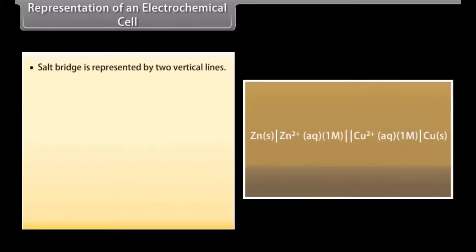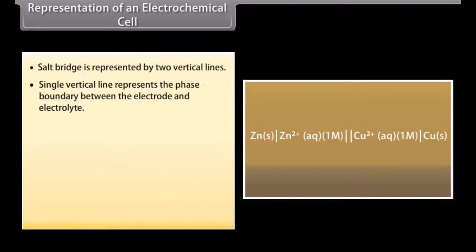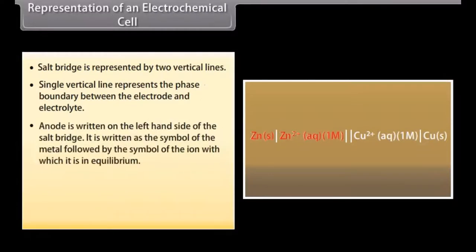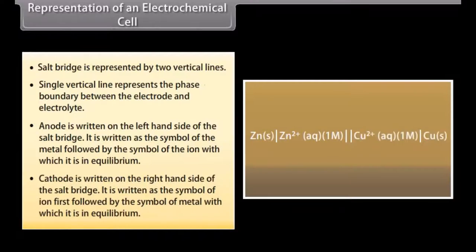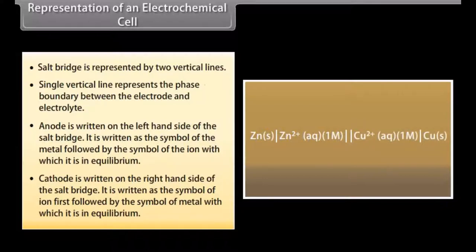Representation of an electrochemical cell. A galvanic cell is represented as follows: the salt bridge is represented by two vertical lines. A single vertical line represents the phase boundary between the electrode and electrolyte. The anode is written on the left-hand side of the salt bridge, as the symbol of the metal followed by the symbol of the ion with which it is in equilibrium. The cathode is written on the right-hand side of the salt bridge, as the symbol of the ion first, followed by the symbol of the metal with which it is in equilibrium.